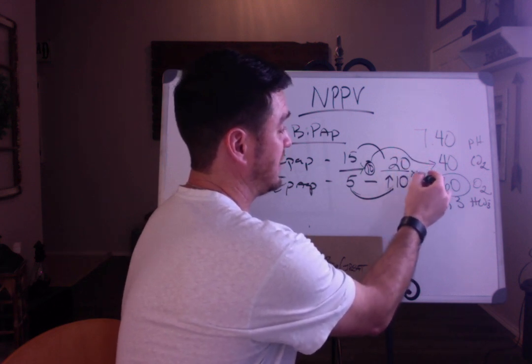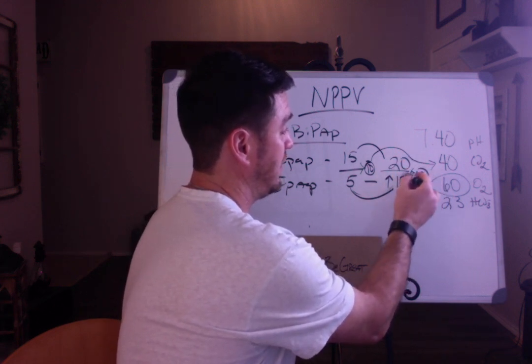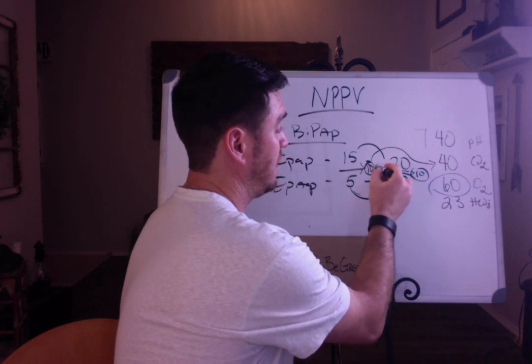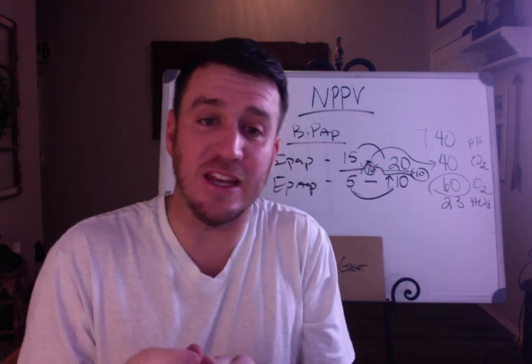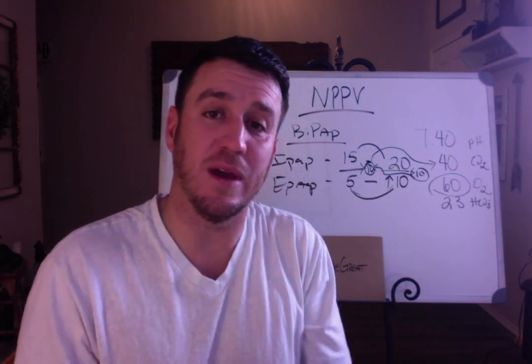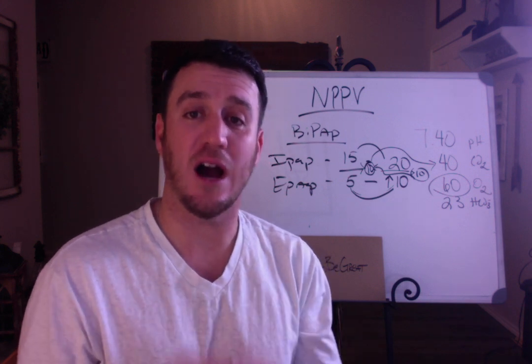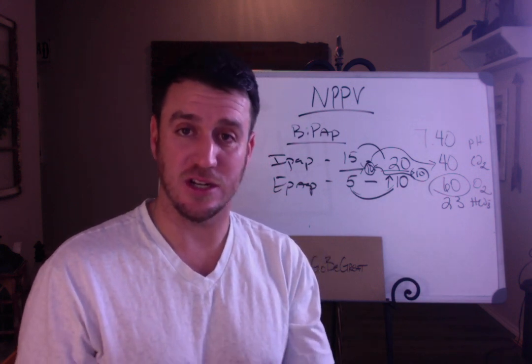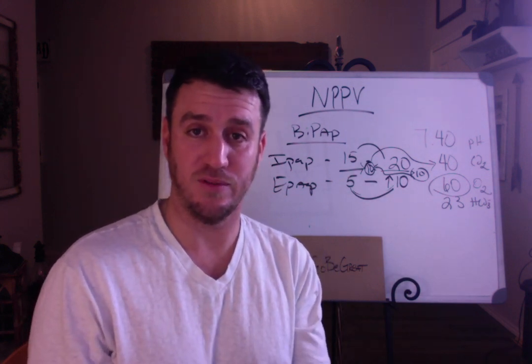We want to keep our pressure support because that's what's driving our ventilatory mechanism — it's what's keeping our patient breathing comfortably and CO2 at the right level. So if we increase EPAP to 10, we must also increase IPAP to 20 in order to keep our pressure support at 10. Now the difference stays 10, and our ventilation remains the same while our oxygenation should improve.